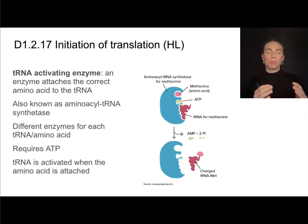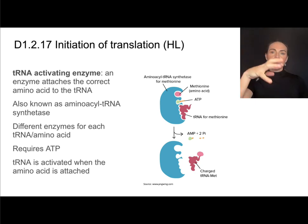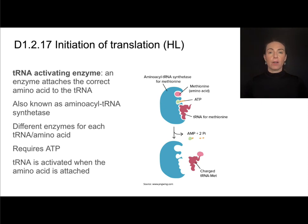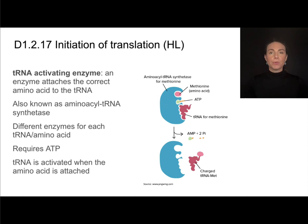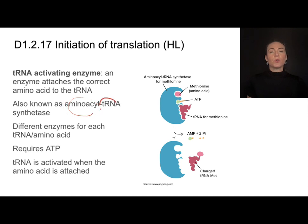Now that we've added more detail to transcription, let's do the same with translation. You learned that tRNA molecules bring their amino acids to the ribosome — they're transferring that amino acid. But we need a good understanding of how that tRNA attaches to its amino acid in the first place. This is due to an enzyme called the tRNA activating enzyme. You may also see it called the aminoacyl tRNA synthetase enzyme — it is an enzyme that attaches an amino acid to a tRNA molecule, specifically the correct amino acid.